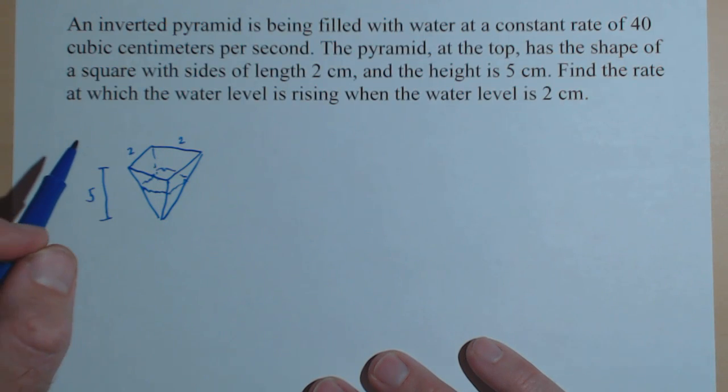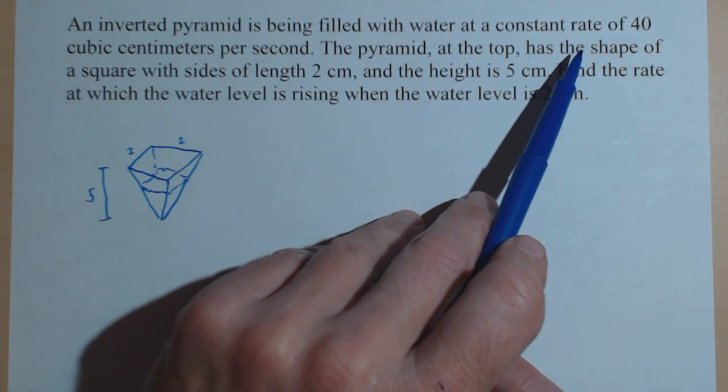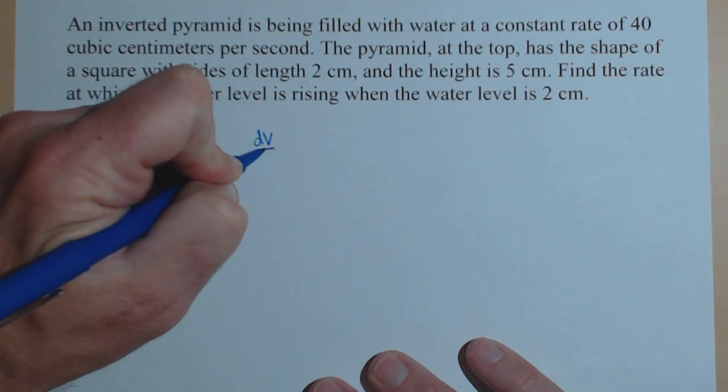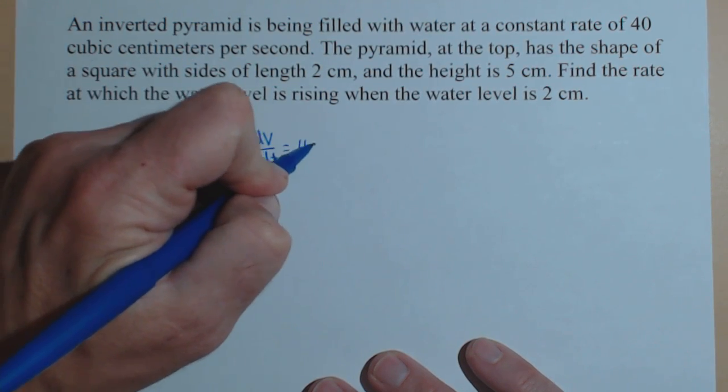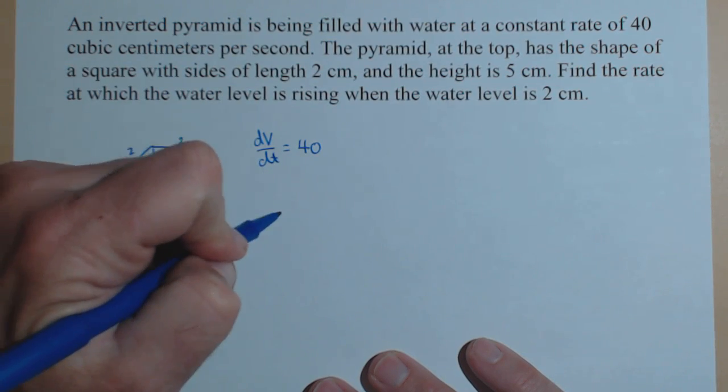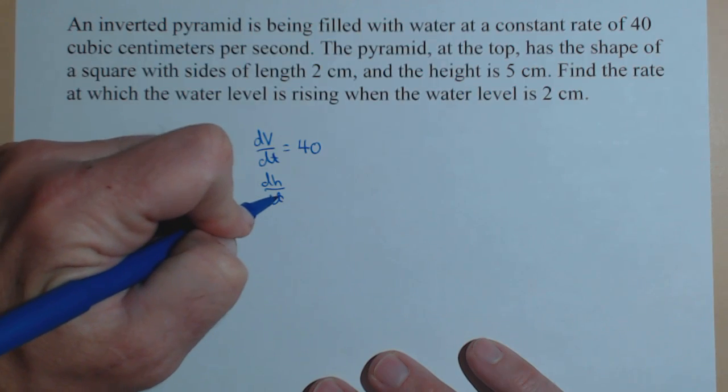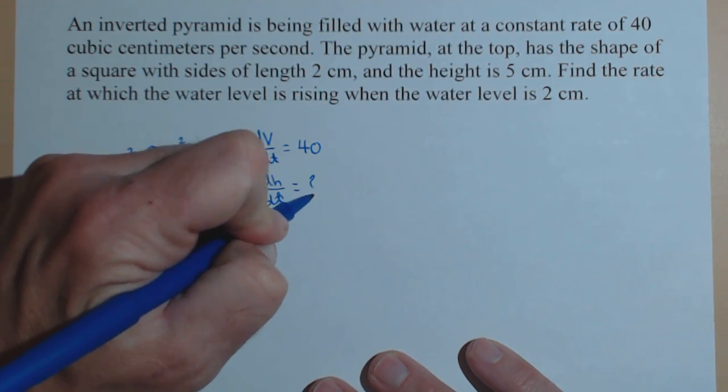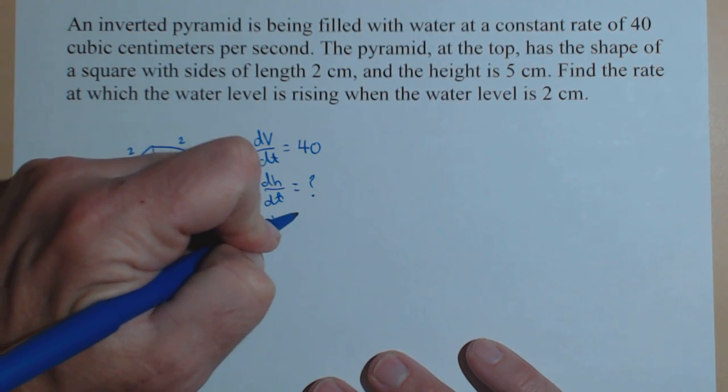We're looking at water being pumped in at 40 cubic centimeters per second. So what that is in our calculus notation is dv dt equals 40. We want to find the rate that the height is increasing. I'll use h for height and v for volume. That's what we're looking for when the height is 2 centimeters.